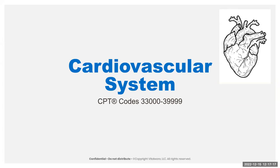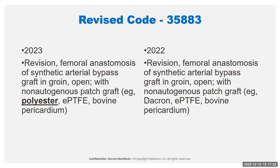Within the cardiovascular system there are some changes. We've got a revised code, the 35883, and this is just a small change where they're changing the word 'background' to 'polyester' so that it's not specific to a brand name — it can be used for other things. Some new codes that we have are for a percutaneous AV fistula creation in the upper extremity.